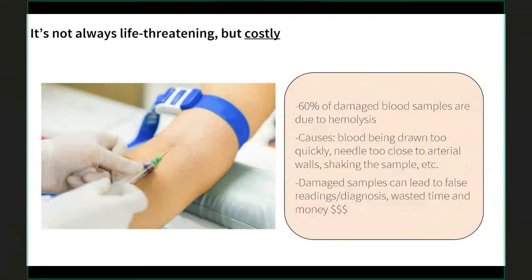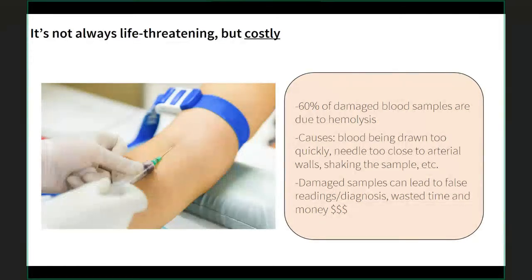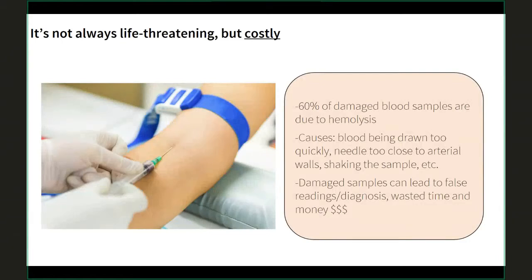Blood damage is also a major cost in clinical settings: 60 percent of damaged blood samples are due to hemolysis, caused by blood being drawn too quickly, the needle being too close to arterial walls, or shaking of the sample after collection. These damaged samples lead to wasted time and money for both patients and clinicians. As a mechanical engineer, I think this shows it would be valuable to measure blood damage simply and accurately — whether blood is being drawn or used in a dialysis situation.